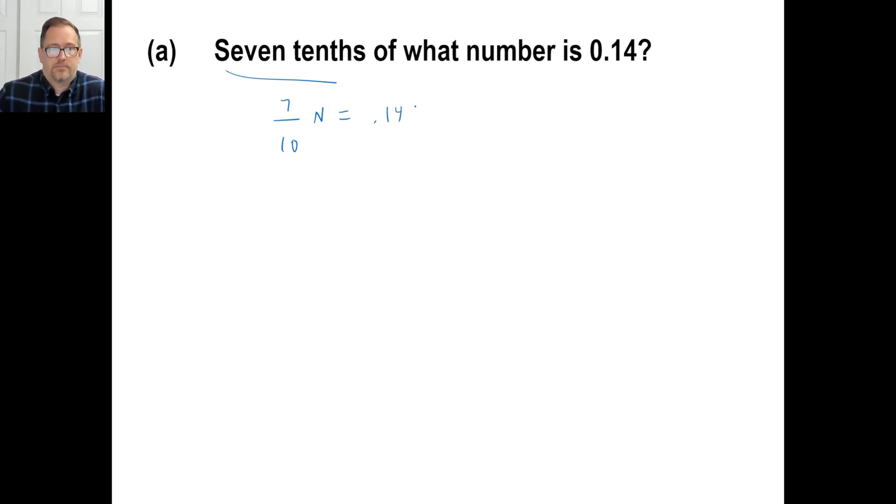That's all there is to it. Now you might look at this and go, wait a minute, how do I do? Oh no, it's seven tenths. I don't know. What's seven tenths as a decimal? 0.7, right? Just write it 0.7. 0.7N equals 0.14. And we know to get rid of that, we're going to divide by 0.7. Divide by 0.7. Nope.